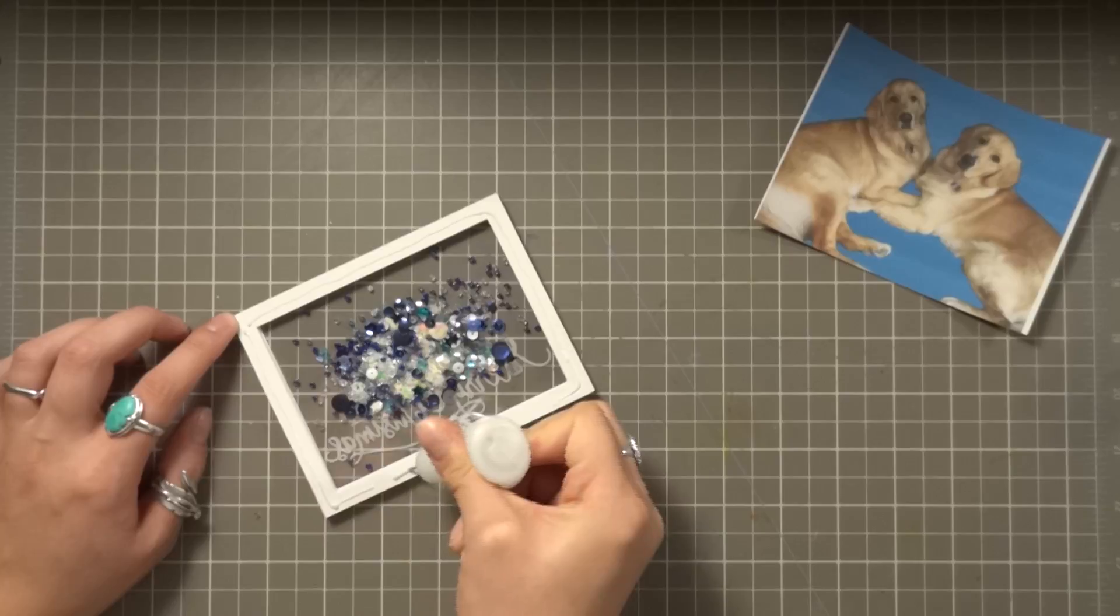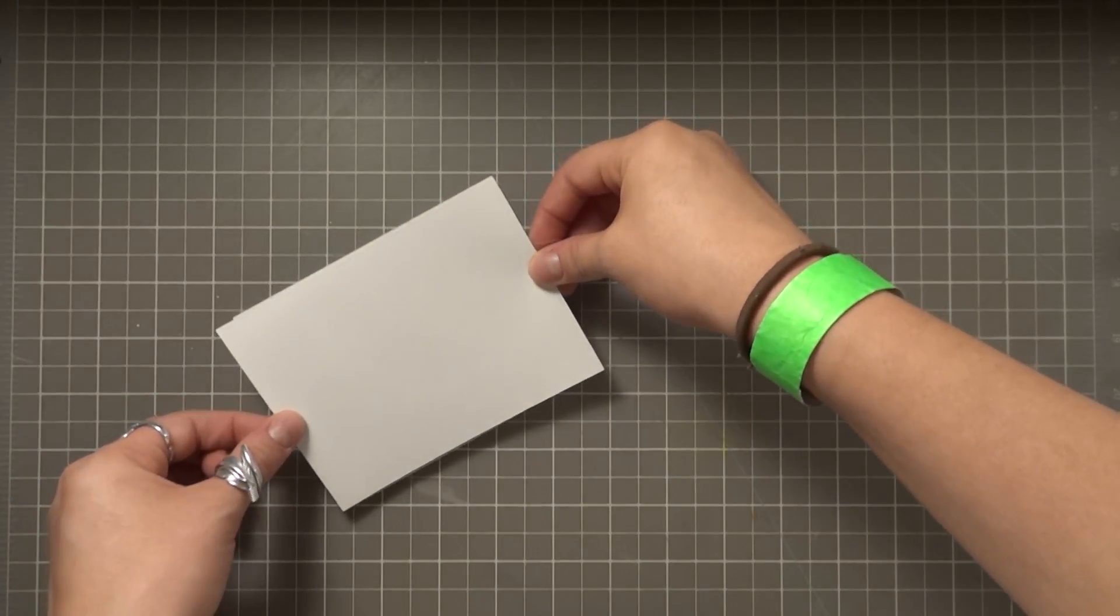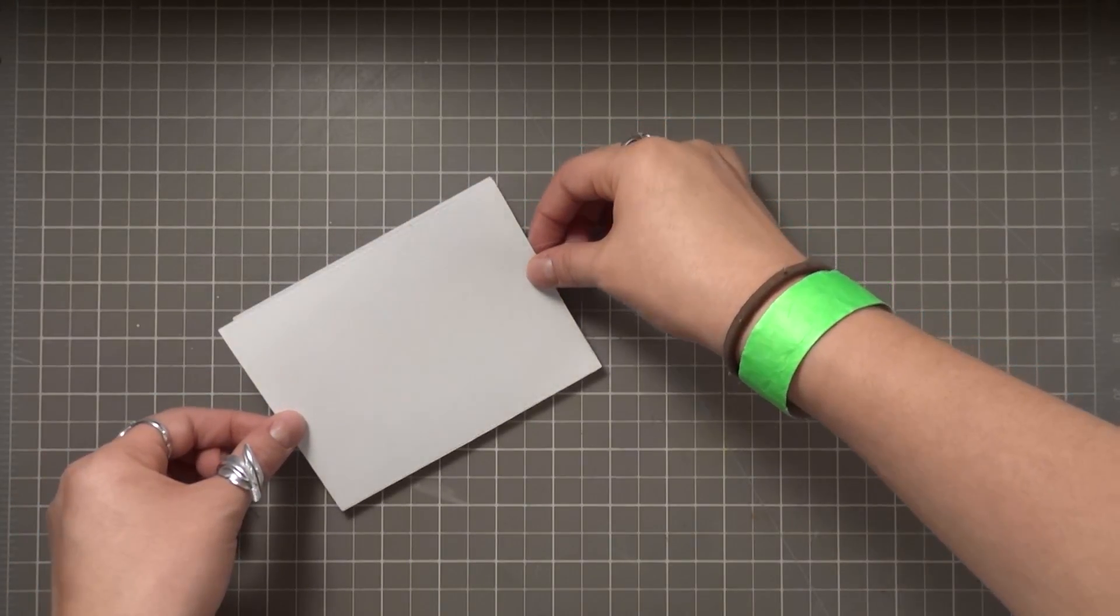I'm again going over with my multi matte medium and I'll align my photo on top and then press firmly down, adhering it into place. And here you can see that fun shaker that it creates.